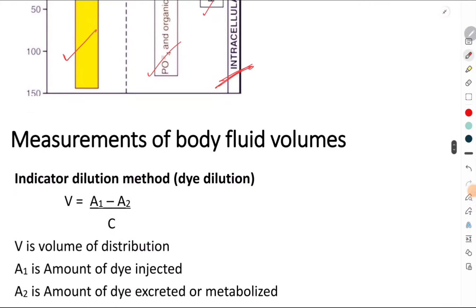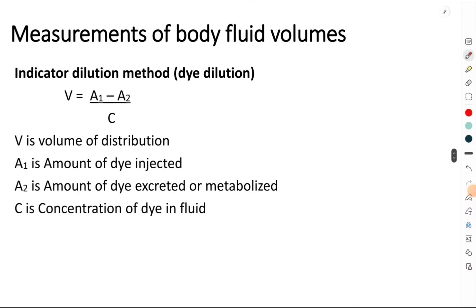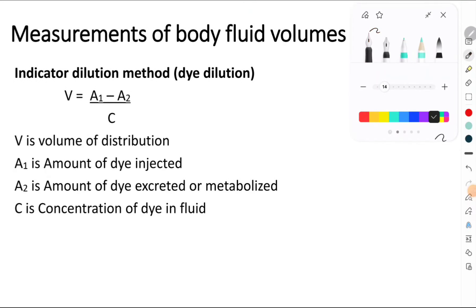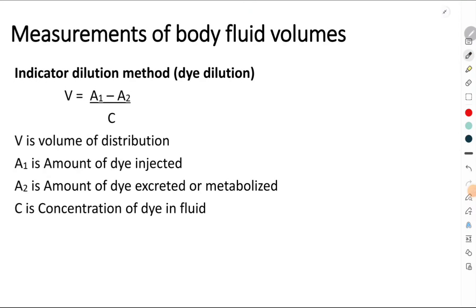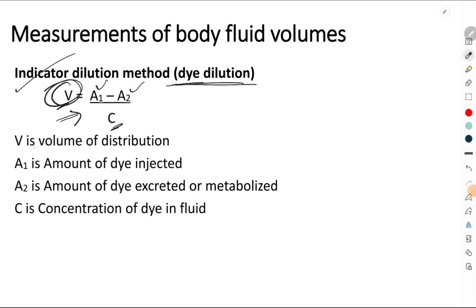Now how are we going to measure these body fluids? We will measure these body fluids using a technique called as the dilution method, also called as the indicator dilution method. A known volume of indicator is inserted into the compartment which we want to measure, and using this formula we can get to know the volume of that compartment. The formula is V = (A1 - A2) / C.